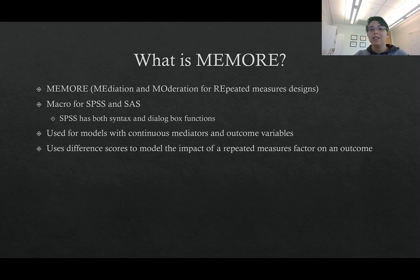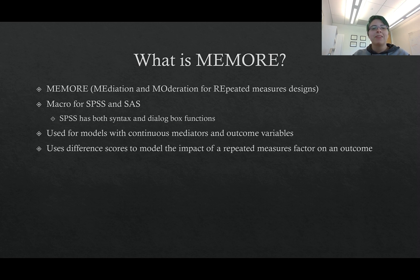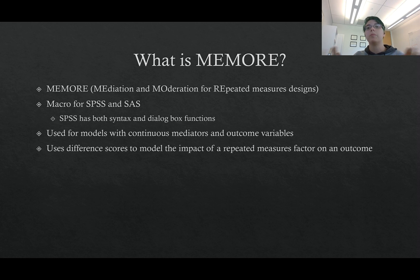These models can be used for models with continuous mediators and continuous outcome variables. At this point I'm not doing anything with dichotomous outcomes, though I do have a student who is working on this. If you're interested, you're always welcome to reach out to me — we would love some practice data. What this model does is it uses difference scores to model the impact of a repeated measures factor on an outcome. In MEMORY, the causal variable of interest is always the repeated measures factor that differentiates the repeated measurements.